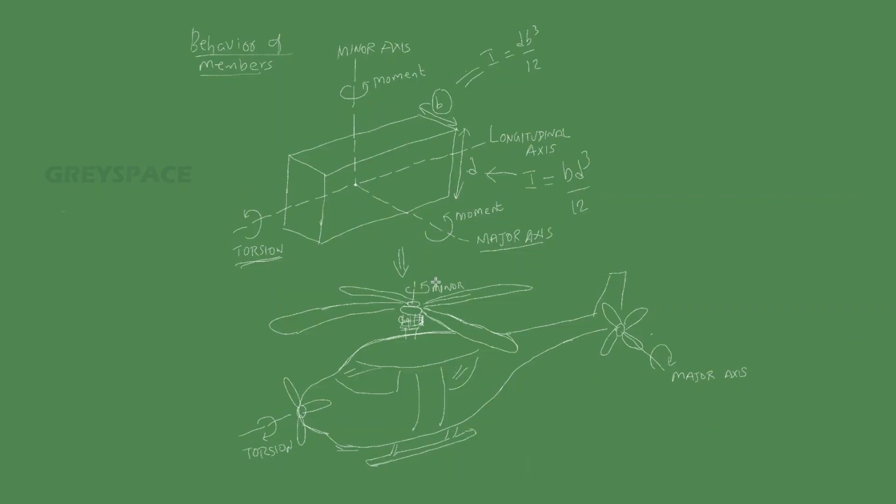compared with the helicopter to understand the concept better. Let's assume a helicopter having three wings: one is at the front, one is at the top, one is at the tail.